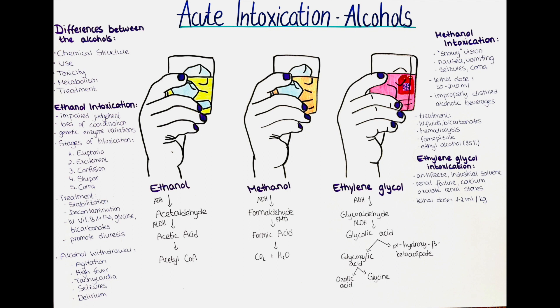The third difference is the toxicity. While ethanol is generally safe to consume in moderation, methanol and ethylene glycol are highly toxic and can cause serious health problems or even death if ingested. Methanol can cause blindness and other neurological damage, while ethylene glycol can cause kidney failure and other severe health problems.